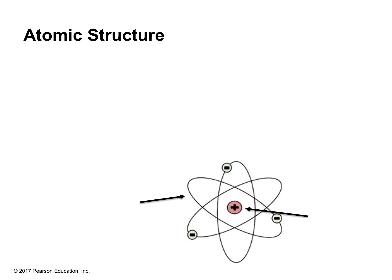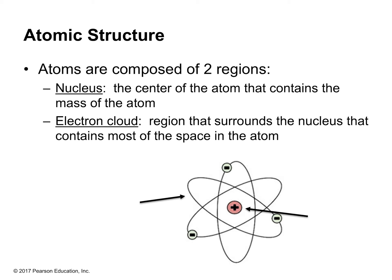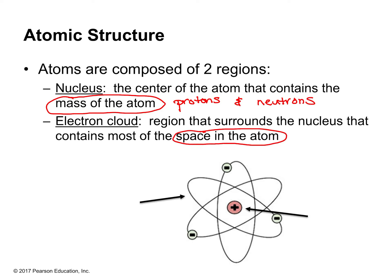Our atom is composed of two regions. One of them is the nucleus — that's going to be the positively charged stuff in the middle. And the electron cloud is going to be around the outside. The nucleus contains the mass of the atom — it contains the protons and the neutrons. The electron cloud is going to be the region that surrounds the nucleus and contains most of the space of the atom, because the nucleus is really dense and doesn't contain much space.